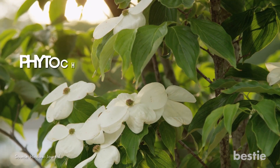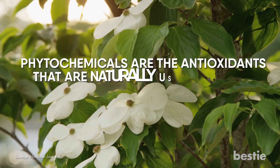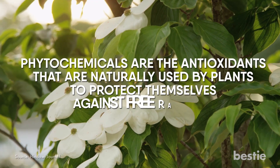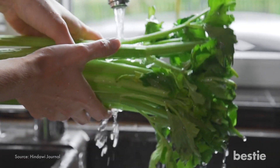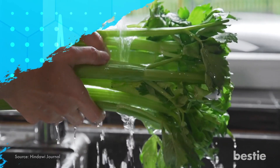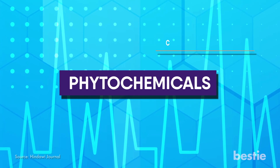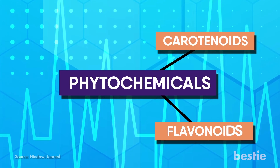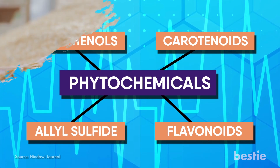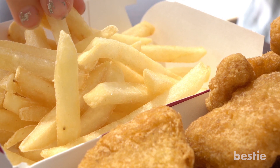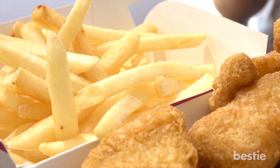Phytochemicals are the antioxidants naturally used by plants to protect themselves against free radicals. Studies show that humans who eat sources of phytochemicals also benefit from the antioxidant properties of the plant. Phytochemicals are broken down into four categories: carotenoids, flavonoids, allyl sulfide and polyphenols. Most natural whole foods such as whole grains, fruits and vegetables contain phytochemicals, whereas processed or refined foods contain little to no phytochemicals.